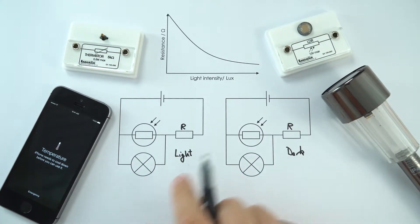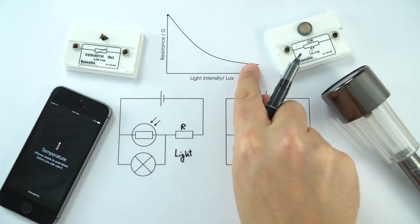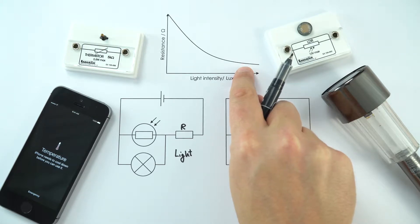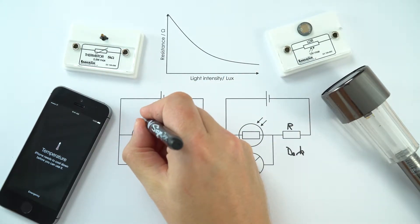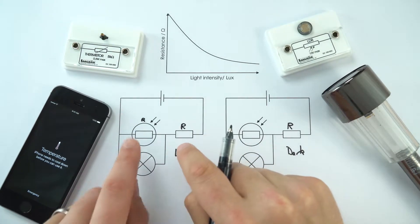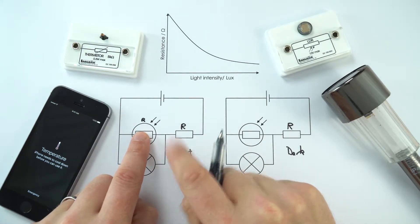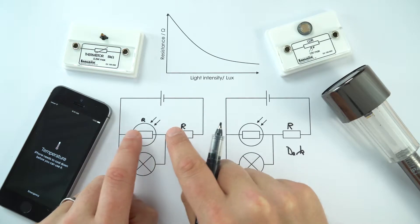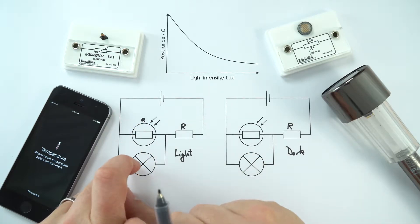Now when it's light, it means we've got a high light intensity, which means we've got a low value of resistance, so I'm just going to put that in there as little r. Now what this means is that this resistance here is smaller than this resistance, and actually that then affects how that potential difference is shared.